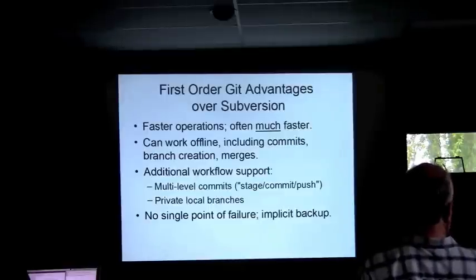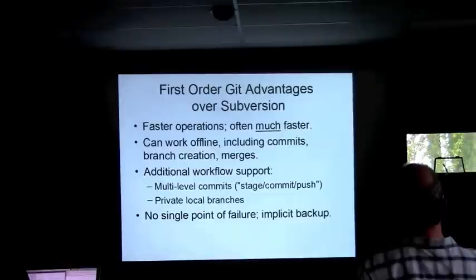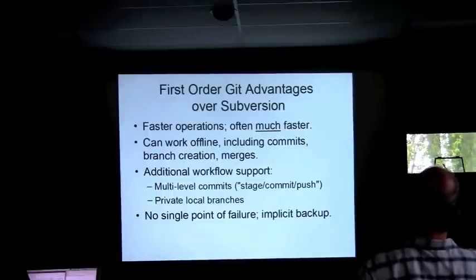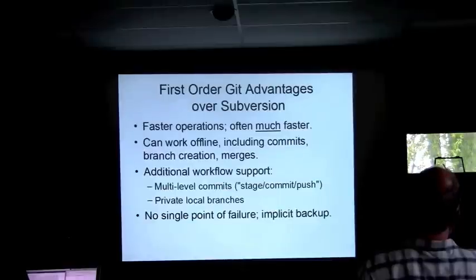The fact that Git has multi-level commits allows you to create a lot of additional workflow support. Private local branches come up time and time again when you ask experienced Git users what the main advantage is. Branches created only for your own purposes — maybe they're abandoned if a brainiac idea turns out to be a brain-dead idea, or merged into a public branch and pushed if they work out. People love that. And another first-order advantage: there's no single point of failure, because every developer has a full backup of the repository.